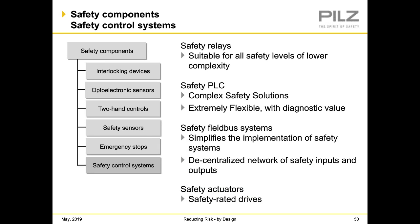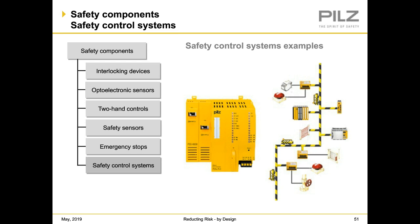Safety control systems include relays, suitable for lower complexity safety levels, and multiple types of safety PLCs ranging from simple to very complex with high diagnostic value. There are also safety fieldbus systems for safety PLCs with distributed IO, providing a decentralized network of inputs and outputs, along with safety actuators, safety-rated drives, and safety-rated contactors. Here's an example of a safety PLC system with a processor in the middle along with distributed IO points connected through e-stops, gate interlocks, throughout a whole machine.